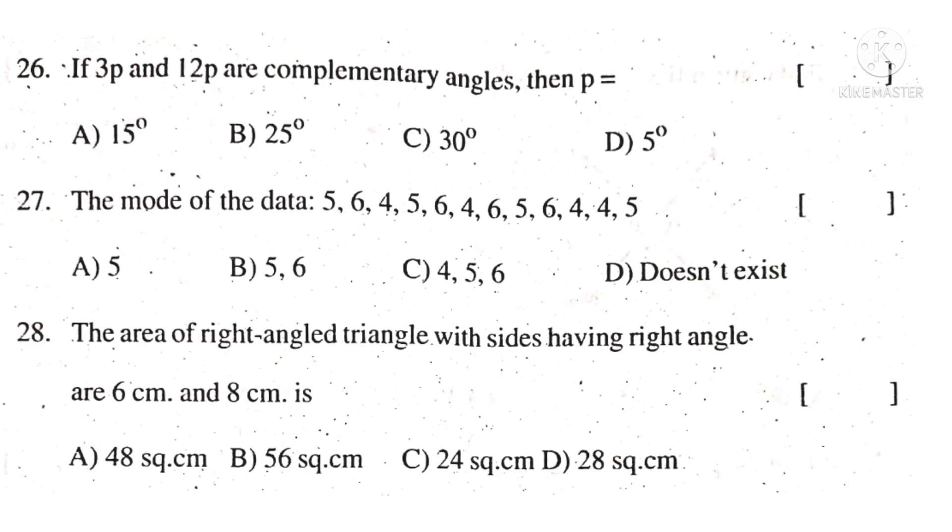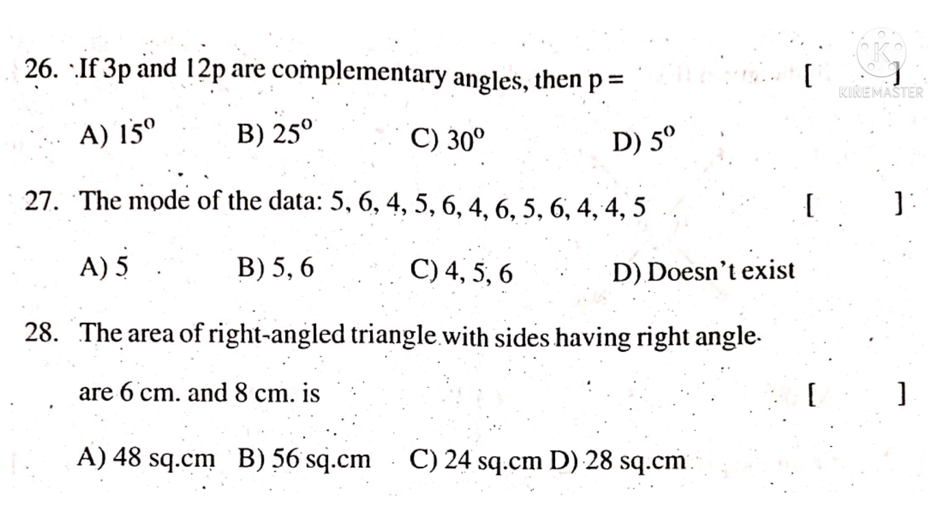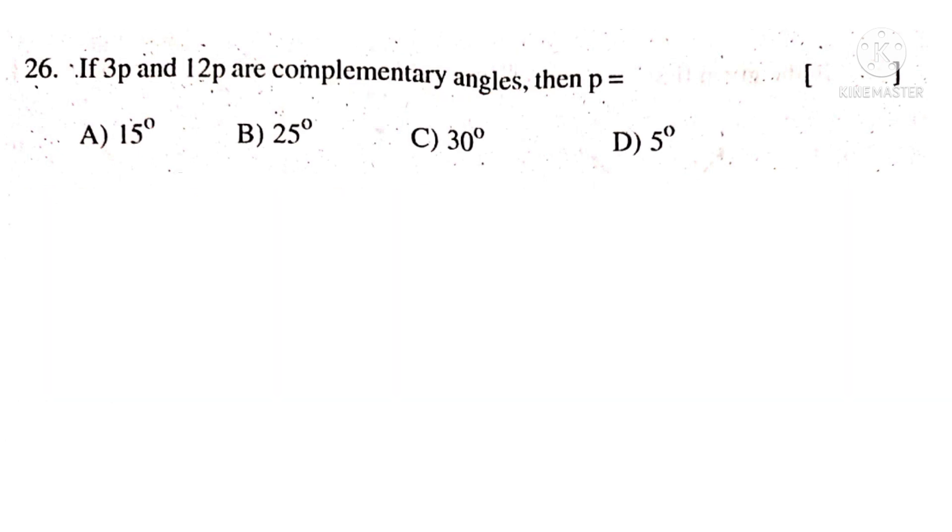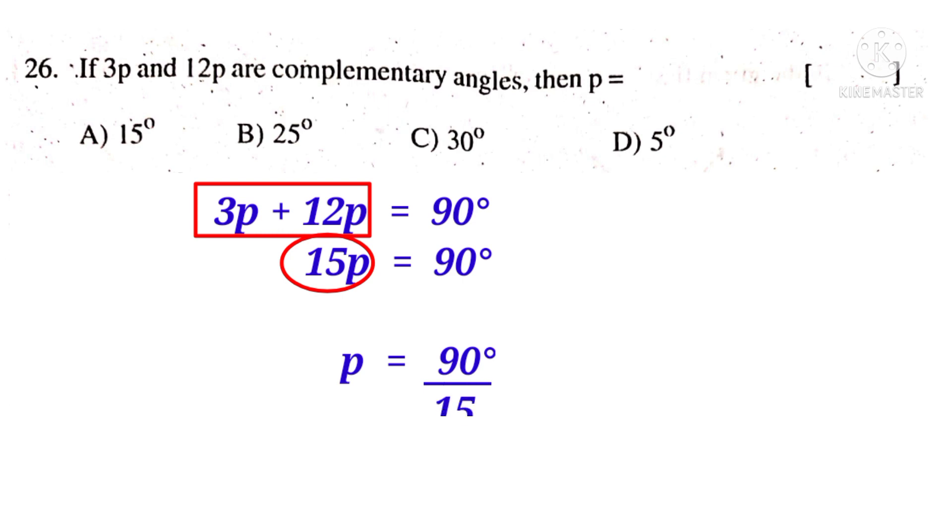Now 26th bit. If 3P and 12P are complementary angles, then P is equal to, observe the word complementary angles, means sum of angles is 90. So 3P plus 12P is equal to 90. So 15P is equal to 90. So P is equal to 90 by 15. On simplification by 15, 15 is 6 times. That is equal to 6 degrees. But there is no choice. So no answer.